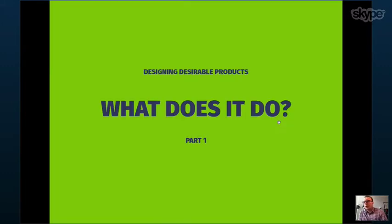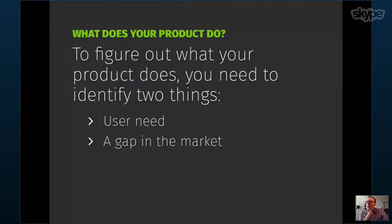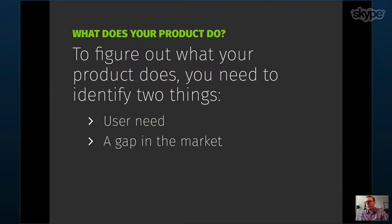What the product does should be based on two things. Primarily, what do people need to achieve with it — user need should be the primary driver, informed by user research activities. Then you need to find a gap in the marketplace: is someone else already doing something similar, and what might yours do differently or better? If similar products exist, you want to distinguish yourself from them or specialize for your specific use case.